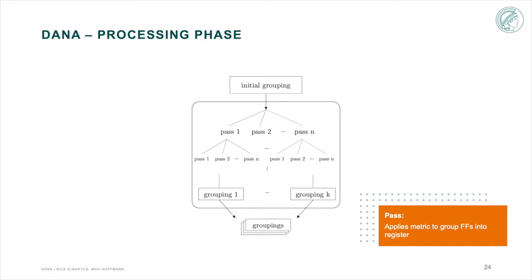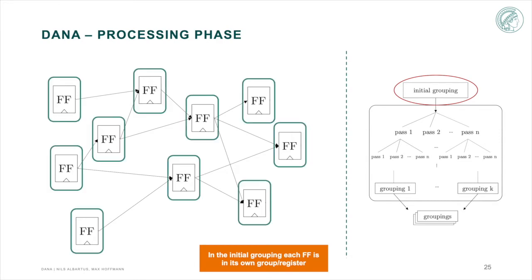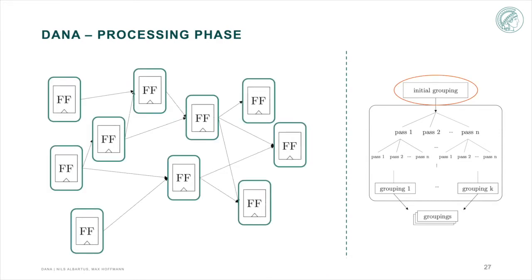This netlist has of course already undergone the preprocessing, so all logic has been removed. In the initial grouping, all flip-flops are in their own register group. This grouping is now going to be input to all passes.